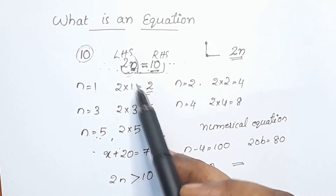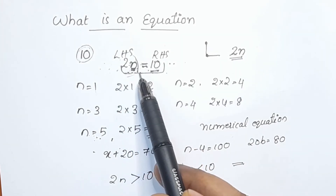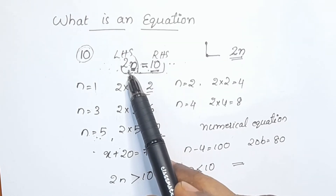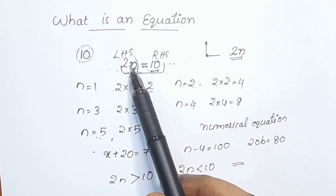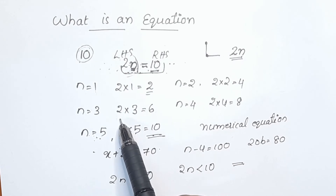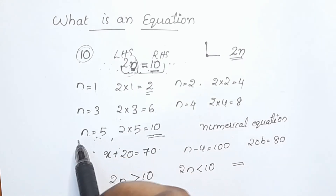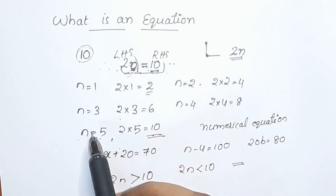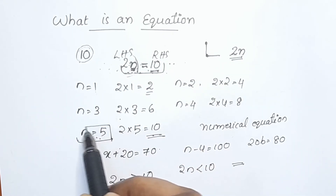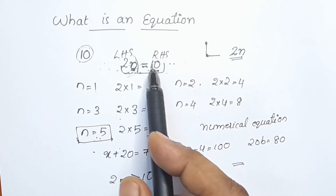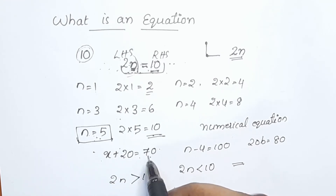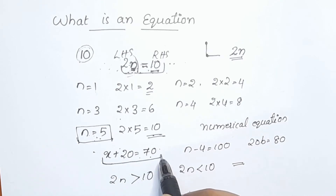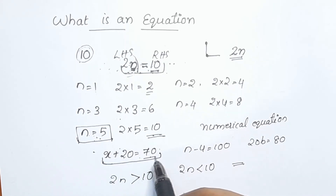Now the solution: 2n is equal to 10. This equation is called n equal to 5, which is the value of n. So, n is equal to 5 and that is the variable. That is what we call the solution. So, 2n is equal to 10 — the solution of this equation is n is equal to 5. This is x plus 20 is equal to 70. The solution of this equation satisfies the equation.